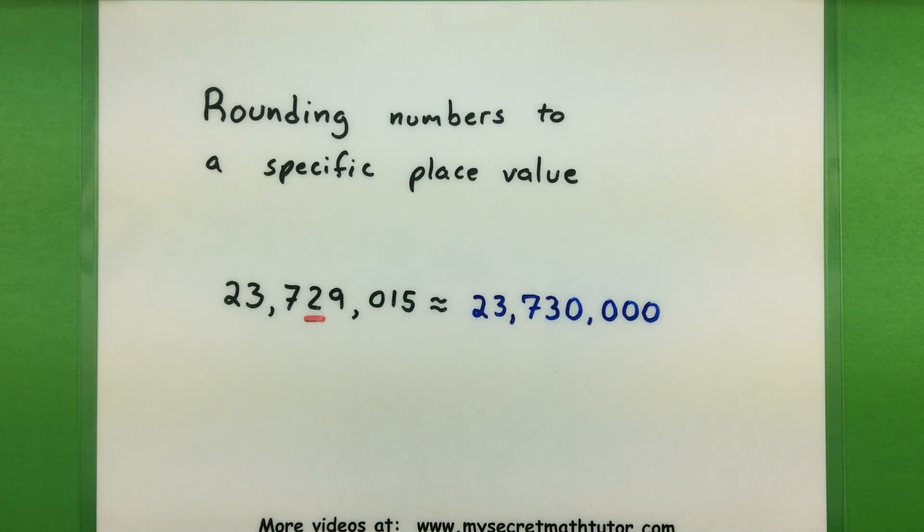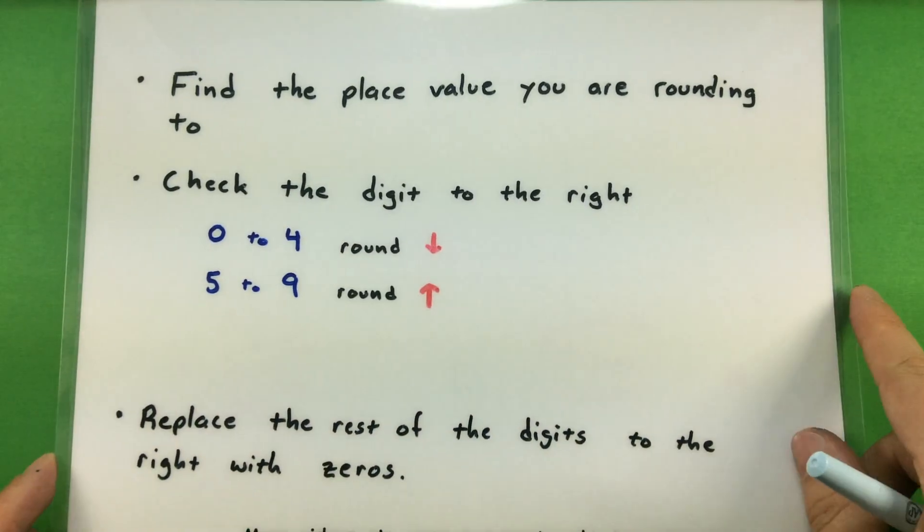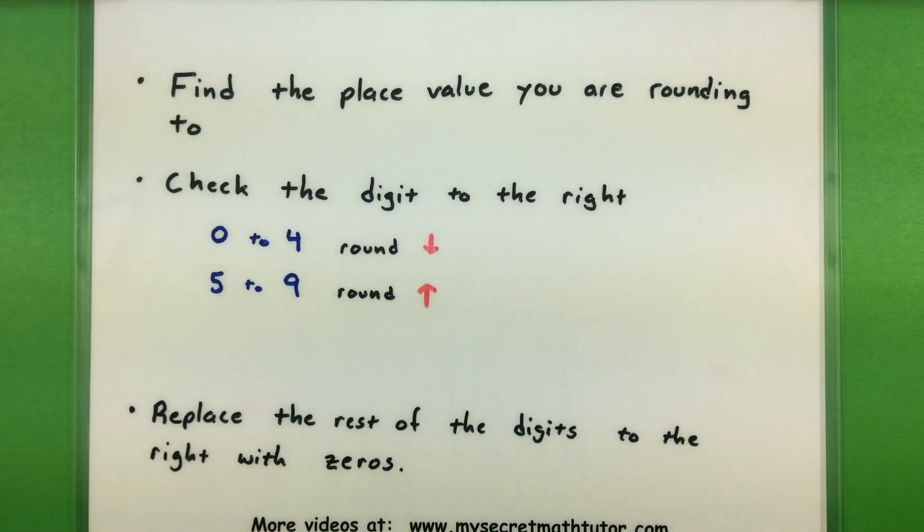I got some tips for this to make it nice and easy. First, you want to identify the place value that you are trying to round to. That really depends on how well you know your place values, but you got to find it first to even begin the process.